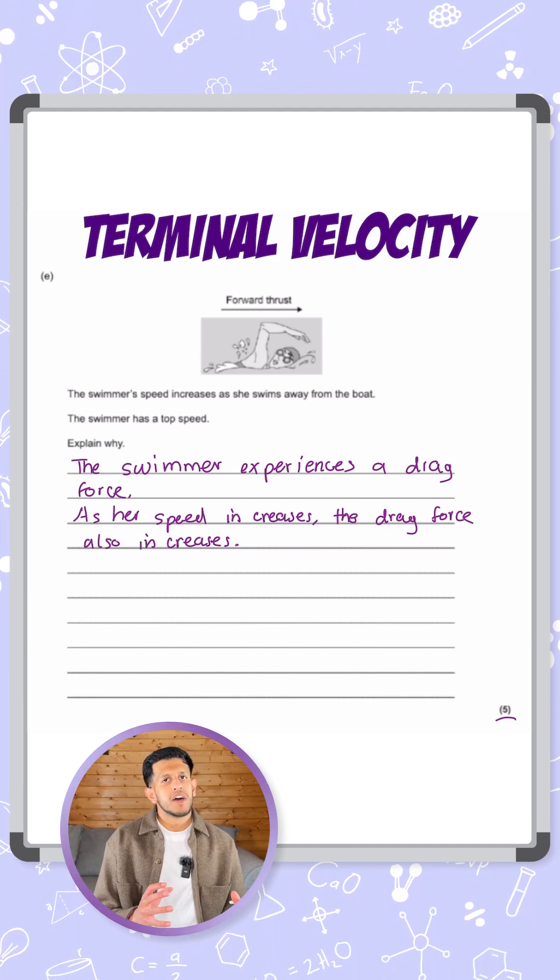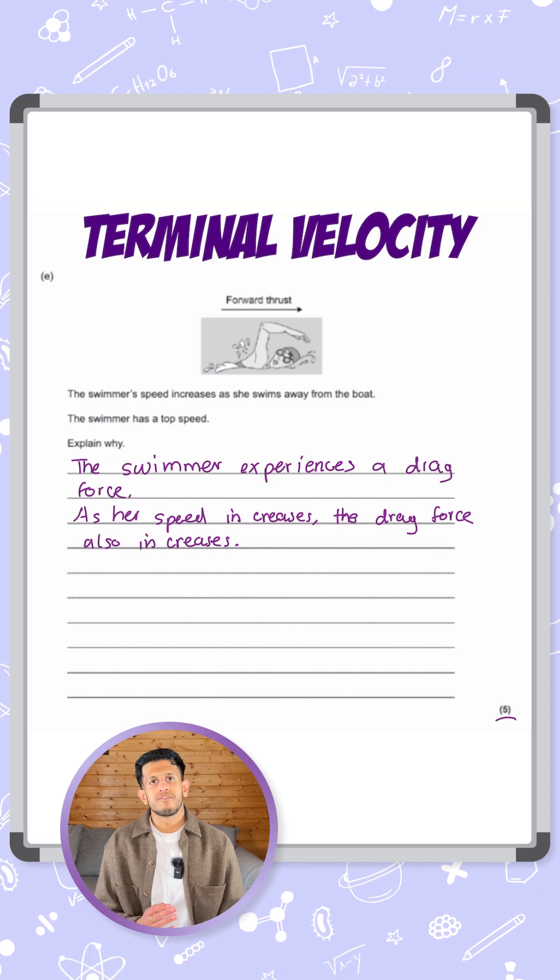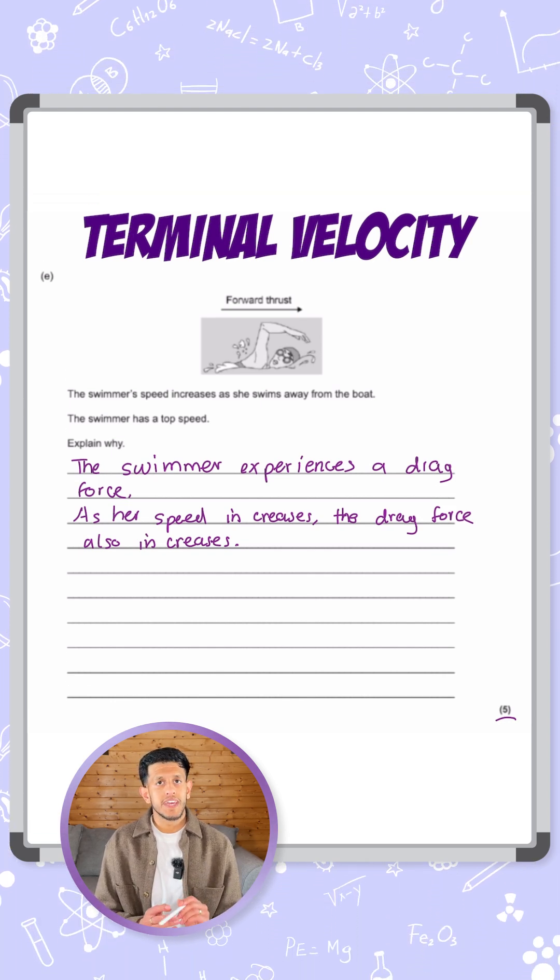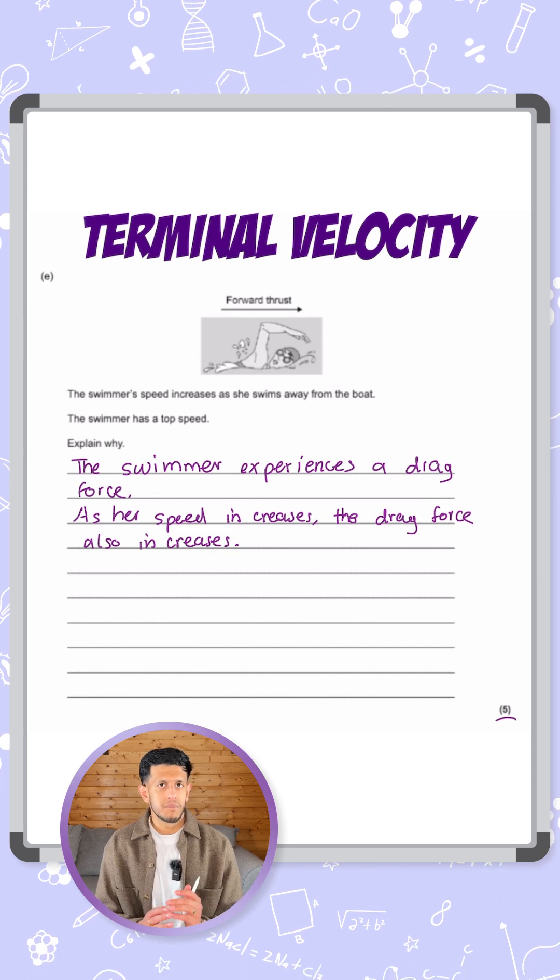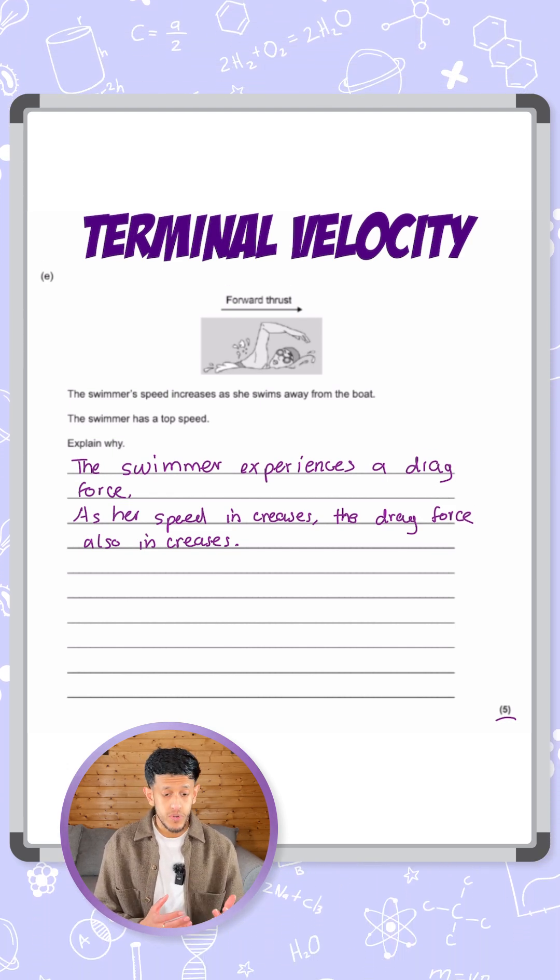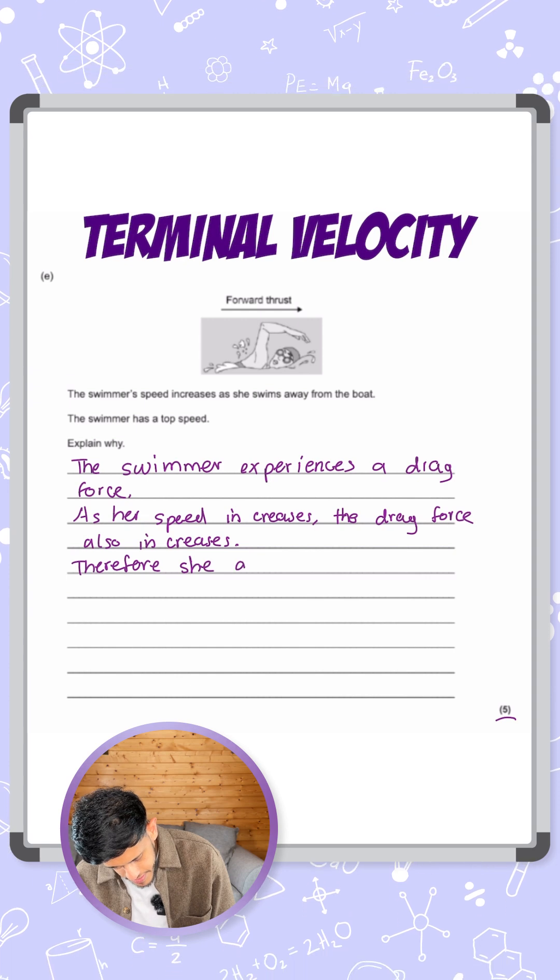Now this is the important bit. Her drag is also increasing, but it's not larger than her forward thrust yet. So therefore, she's still moving forwards, accelerating forwards, but the amount that she does that is less because the resultant force has decreased. So we say, therefore, she accelerates less.